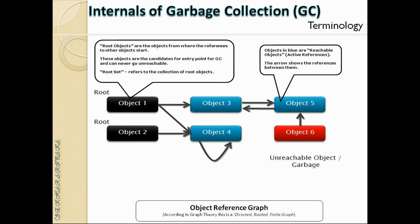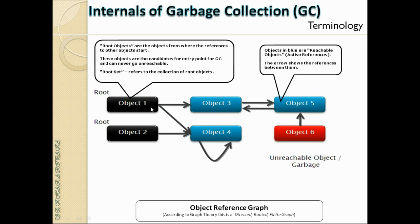Objects in blue in this graph are the reachable objects — also called active references or strong references. The arrows show references between them. There are several reference scenarios: a linear one-to-one reference, a one-to-many reference, a self-reference where object 4 refers to itself, and a cyclic reference where objects 3 and 5 refer to each other.